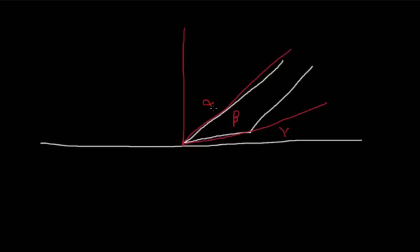Now this angle here for alpha is known as your rake. This angle here for your beta is going to be your knife angle. The angle here for the gamma is going to be your relief.